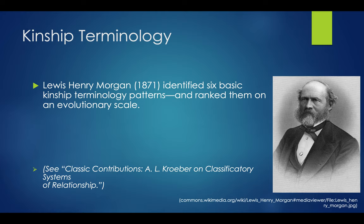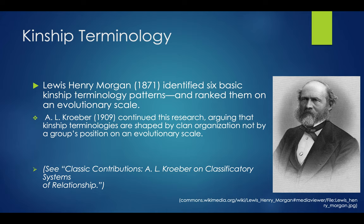There were six basic kinship terminology patterns that Morgan ranked on an evolutionary scale. There's no better or worse way of naming families, so I would hesitate to say that they are evolutionarily significant. Kroeber in 1909 continued this research, arguing that kinship terminologies are shaped by clan organization, not by a group's position on an evolutionary scale.